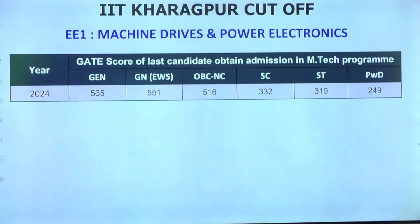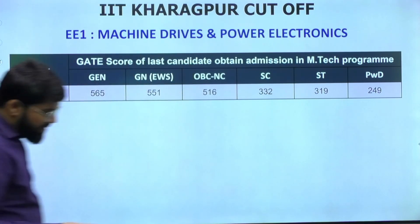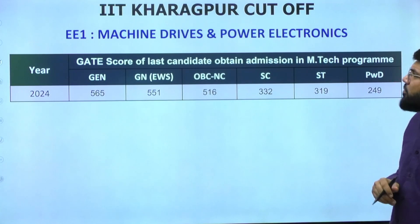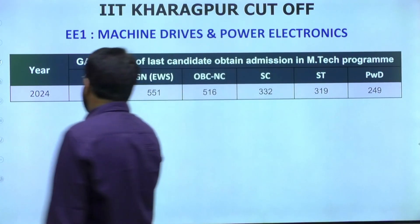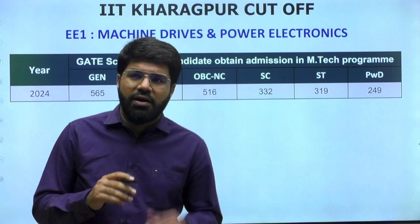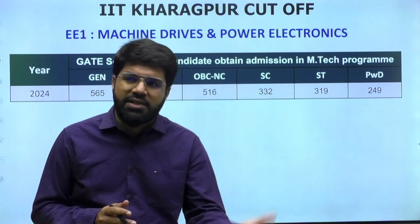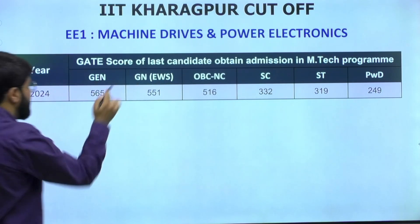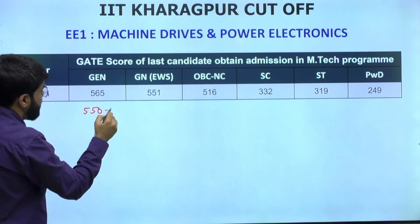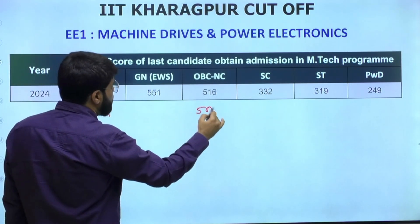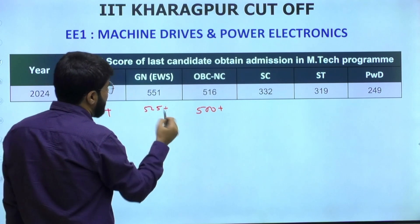Now moving to EE specializations. The first is Machine Drives and Power Electronics. EE students often have MVLSI as their first preference, but for those interested in power electronics, this is usually the top choice after MVLSI. The last year cutoff was 565. Safe score recommendations: General - 550+, EWS - 520-525+, OBC - 500+. For SC, last year it was 332 but 350+ would be a safer call; ST - 300+, PWD - 250+.